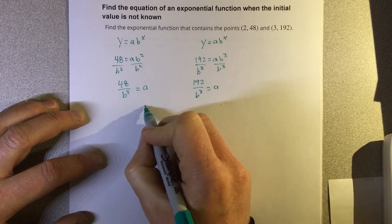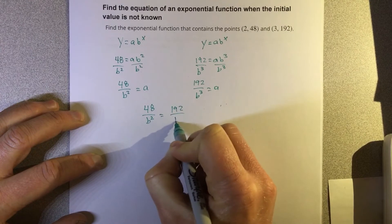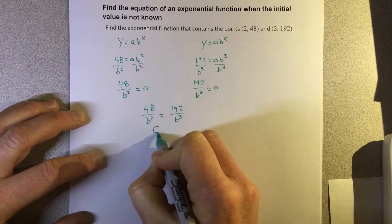If they both equal a, they're equal to each other. So that's 48 over b squared equals 192 over b cubed. We're going to cross multiply.